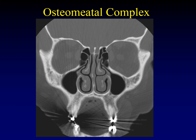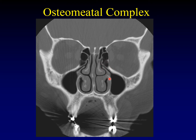Here's an example of the osteomeatal complex. Every sinus has an os — the hole through which mucus escapes — with all cilia beating mucus toward that os. Then there is a long thin tube called the infundibulum. The hole at the other end where it dumps into the nasal cavity is called the hiatus semilunaris. The bone forming the medial aspect of the infundibulum is called the uncinate process. All of this together is the osteomeatal complex, which drains into the middle meatus.